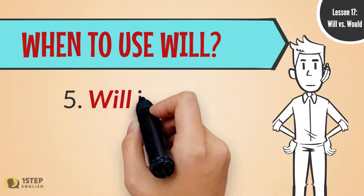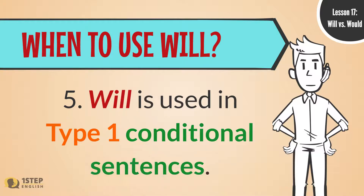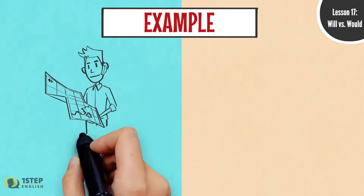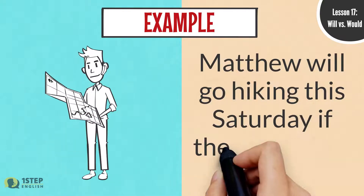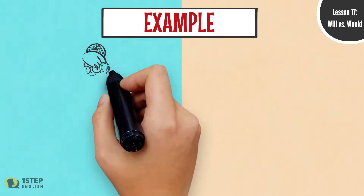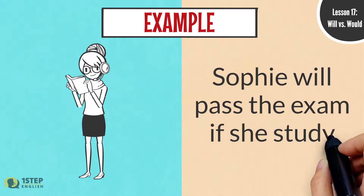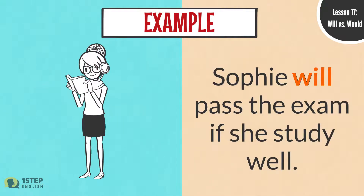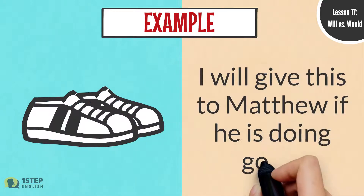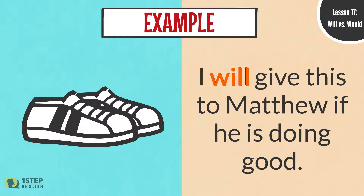When to use Will. Five: Will is used in type 1 conditional sentences. For example: Matthew will go hiking this Saturday if the weather is good. Sophie will pass the exam if she studies well. I will give this to Matthew if he is doing good.